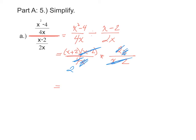So our final solution, our simplified fraction, since there's no more factors to cancel, is x plus 2 over 2.